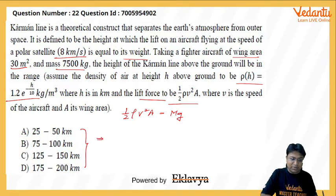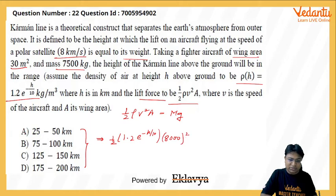So we can write half times rho. Rho is given as 1.2 e raised to power minus h by 10. This is the value of rho. The value of v squared: v is 8 kilometers per second, so this is 8,000 squared. Area 30 is given. This equals mg.